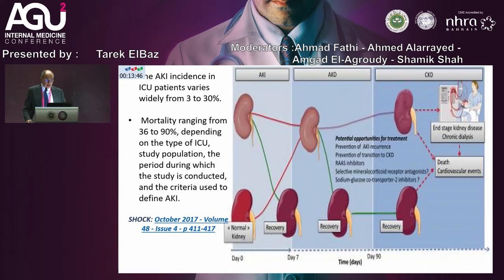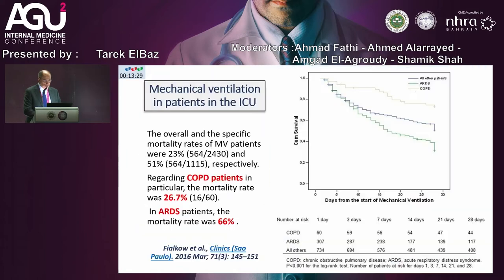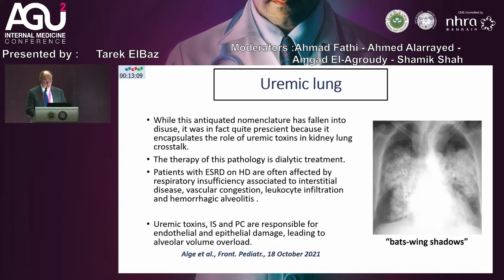We have to realize that AKI is something serious and happens quite often in the intensive care. There is variability in incidence related to specific centers, how they diagnose, and the type of morbidity they see. AKI in the ICU is not uncommon, particularly for patients who need assisted ventilation. COPD patients needing ventilation have a mortality rate as high as 26%, and patients with ARDS could have a mortality rate up to 66%.